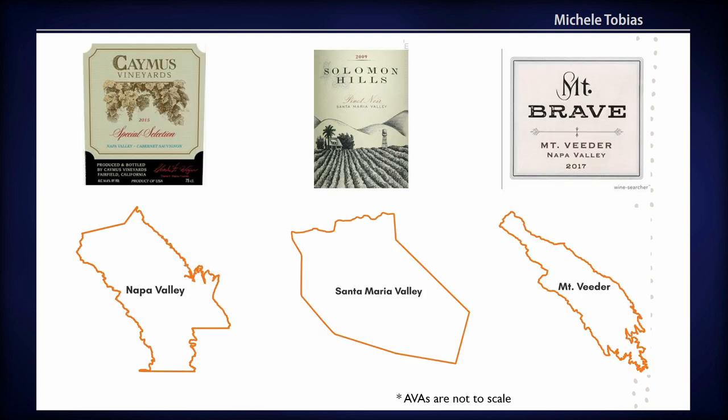If the government decides they like the boundary, they produce what's called a final rule, which creates a publication that goes into our list of laws. These boundaries are used for marketing, so if you have a bottle of wine from the US, you may see a designation on the label — things like Napa Valley, Santa Maria Valley, and Mount Veeder are all actual AVA boundaries.